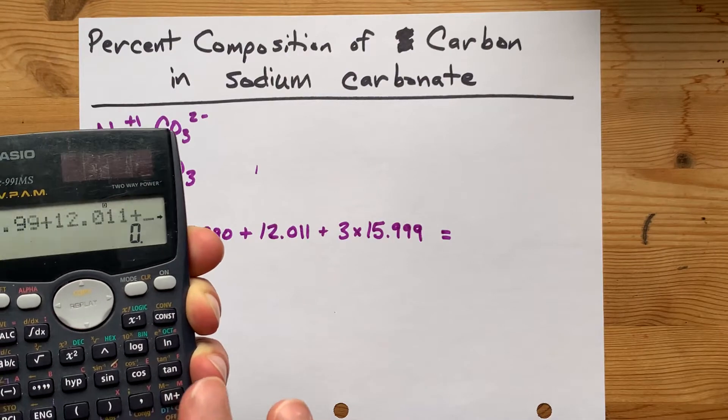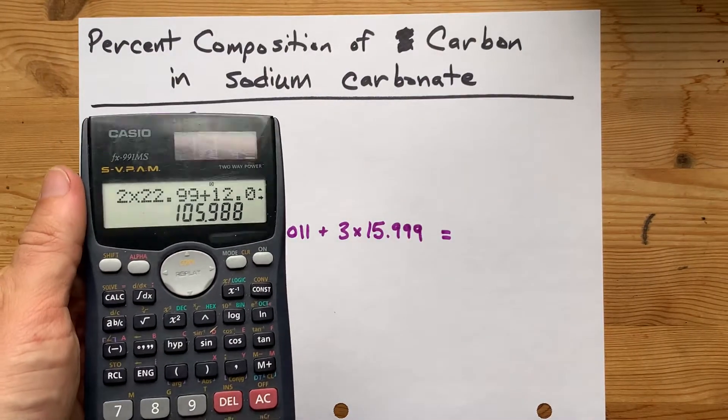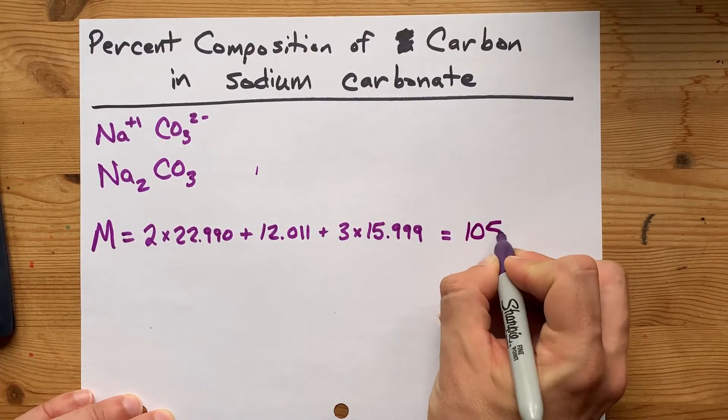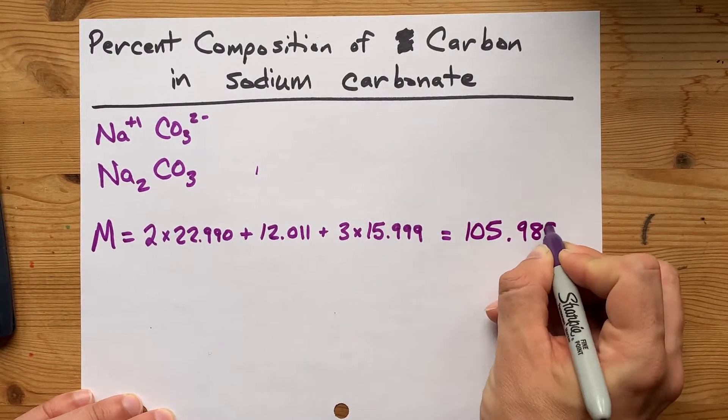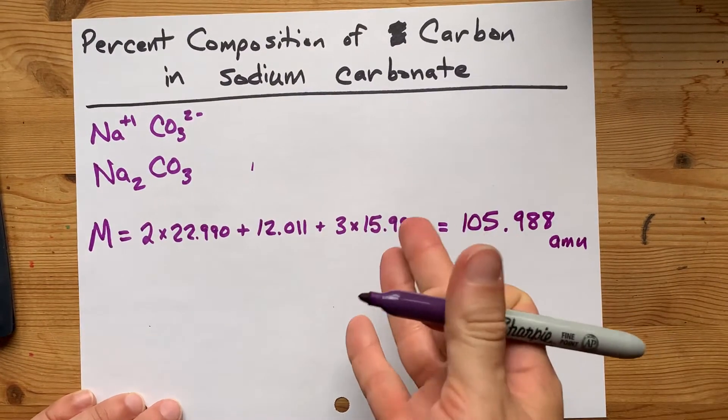105.988. That is the number of atomic mass units that each unit of sodium carbonate weighs.